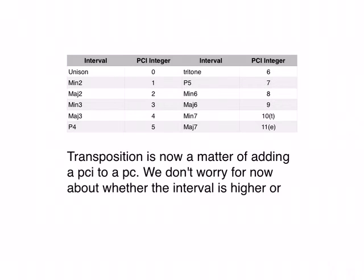So the pitch class interval integer for a unison is 0. You're not moving at all. A minor second, you're moving 1. A major second, 2. A minor third, 3. And all the way up to a major seventh, being a pitch class interval integer of 11.